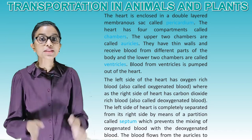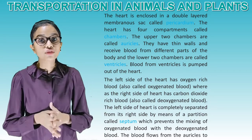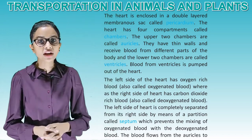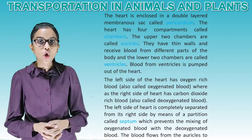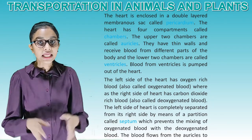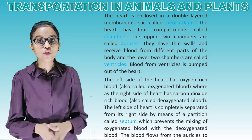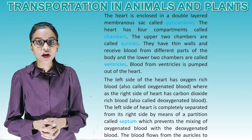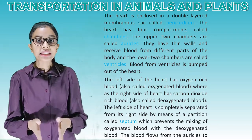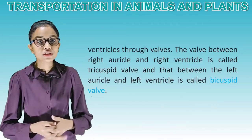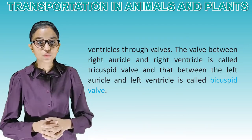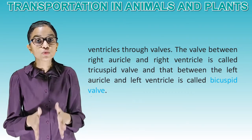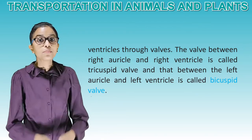Blood from ventricles is pumped out of the heart. The left side of the heart has oxygen-rich blood, also called oxygenated blood, whereas the right side of the heart has carbon dioxide-rich blood, also called deoxygenated blood. The left side of the heart is completely separated from its right side by means of a partition called septum, which prevents the mixing of oxygenated blood with the deoxygenated blood. The wall between right auricle and right ventricle is called tricuspid valve, and that between the left auricle and left ventricle is called bicuspid valve.